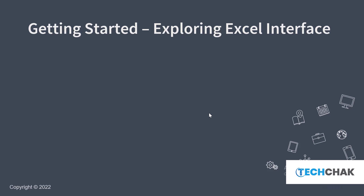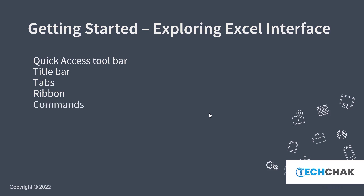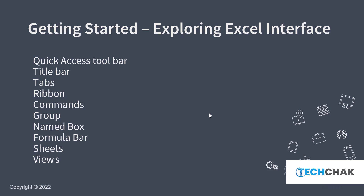The first thing we'll be looking at in the Excel interface is the Quick Access Toolbar, which gives us access to setting commands. We'll be looking at the Title Bar, which talks about the title of the workbook. We'll also be looking at Tabs, which were formerly called Menus, and the Ribbon, which is under the tabs. We'll be looking at Commands, Groups, Name Box, Formula Bar, Sheets, and last but not least, the Views in Excel. So let's dive into the interface and see how it works.